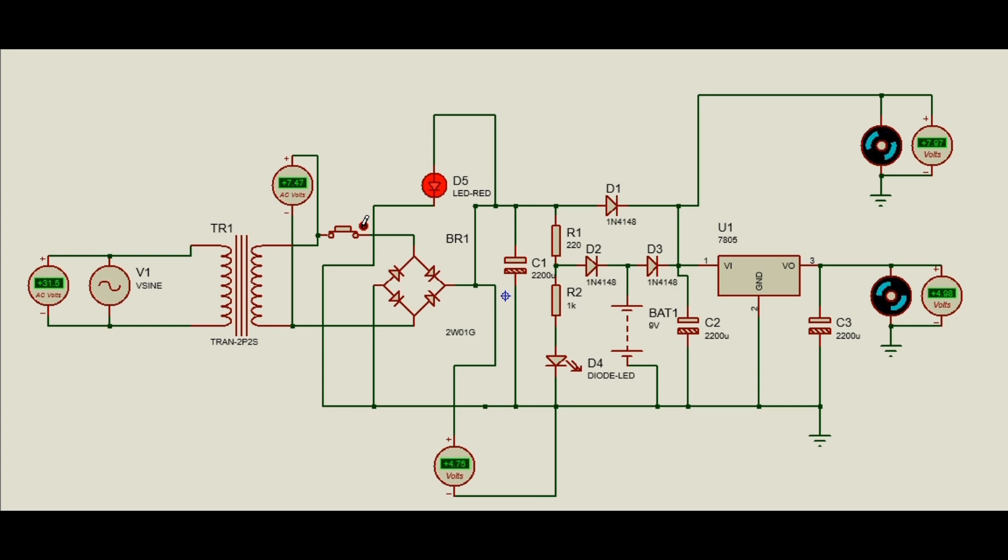The circuit charges the battery when power is on, and when power is cut, the battery provides power to the circuit almost instantly due to the filter circuits. The voltage regulator regulates the DC power.